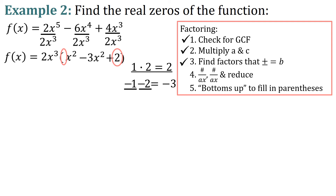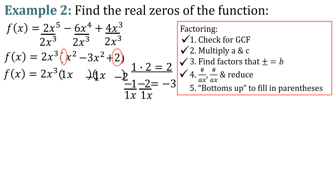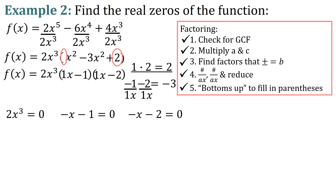We put both factors over ax and reduce. Our a is 1, so negative 1 over x and negative 2 over x are fully reduced. Filling in the parentheses using bottoms-up: the denominators are 1x, slid up, with negative 1 and minus 2. So f of x equals 2x cubed times (x minus 1) times (x minus 2). Now we set each factor equal to zero: 2x cubed equals 0, x minus 1 equals 0, x minus 2 equals 0.